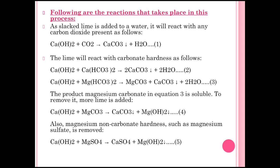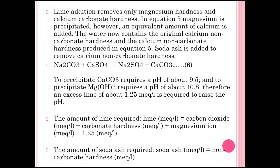Magnesium non-carbonate hardness such as magnesium sulfate is also removed — when lime reacts with water containing magnesium sulfate, calcium sulfate and magnesium hydroxide precipitates are removed. When lime addition removes only magnesium hardness and calcium carbonate hardness, an equivalent amount of calcium is added back to the water, which then contains the original calcium non-carbonate hardness plus calcium non-carbonate hardness produced in reaction 5.